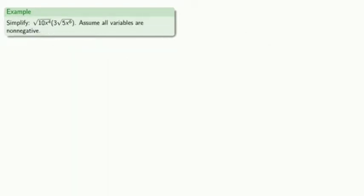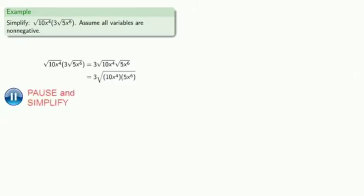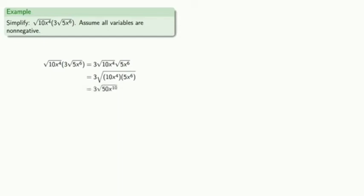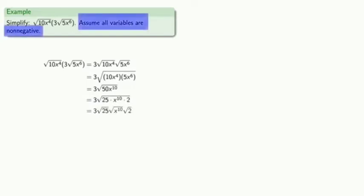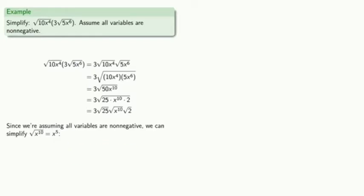One more example: we take this product of square roots and rearrange our factors. The product of square roots is the square root of a product. We simplify the inside by finding perfect square factors. Here we've assumed that all of our variables are non-negative, and because of that assumption, the square root of x to the 10th can be reduced to x to the 5th. Putting everything together gives us our final answer.